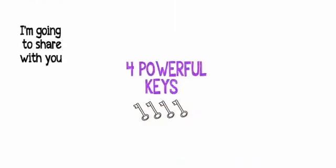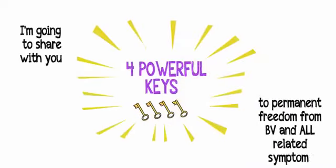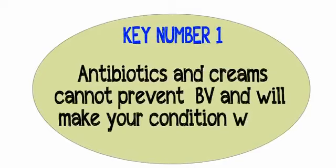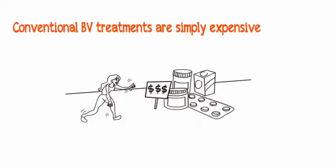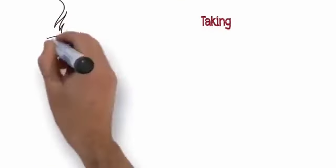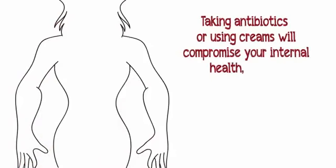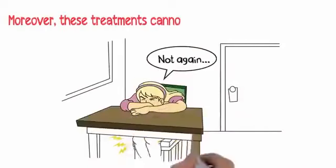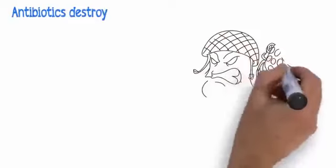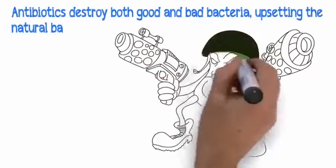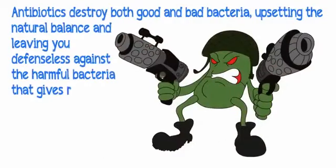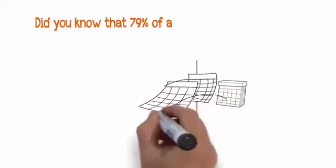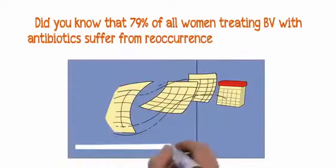I'm going to share with you four powerful keys to permanent freedom from BV. Key number one: antibiotics and creams cannot prevent BV and will make your condition worse. Conventional BV treatments focus on alleviating the pain, itching, and discomfort. Taking antibiotics or using creams will compromise your internal health, disrupt your intestinal balance, and make your bacterial vaginosis worse in the long run. Antibiotics destroy both good and bad bacteria, upsetting the natural balance. Did you know that 79% of all women treating BV with antibiotics suffer from reoccurrence within two to three months?